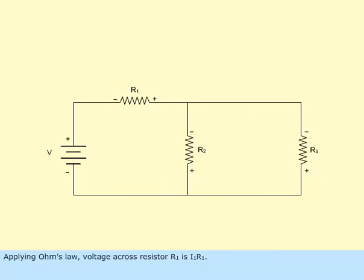Applying Ohm's Law, voltage across resistor R sub 1 is I sub 1 R sub 1.